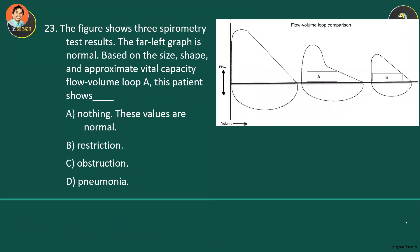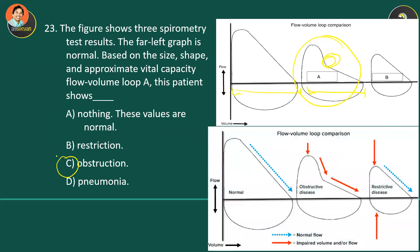The figure shows three spirometry test results. Comparing flow-volume loop A with the normal graph on the left: the PVC (vital capacity) appears similar, around 4 liters, but there is a downward curve in the flow. This indicates obstruction. The correct answer is C — obstructive disease, like asthma.